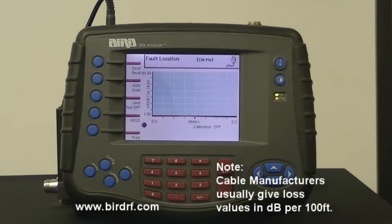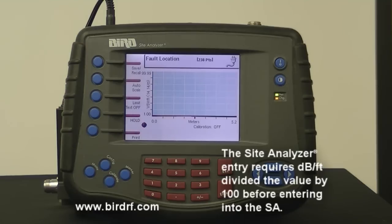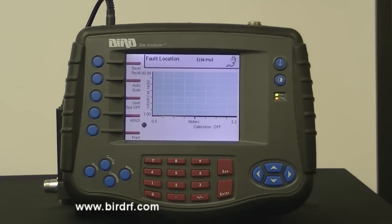One other thing to keep in mind is cable manufacturers generally give their loss values in dB per 100 feet. The site analyzer entry requires dB per foot, so the value on the specification sheet may need to be divided by 100 before entering into the site analyzer.